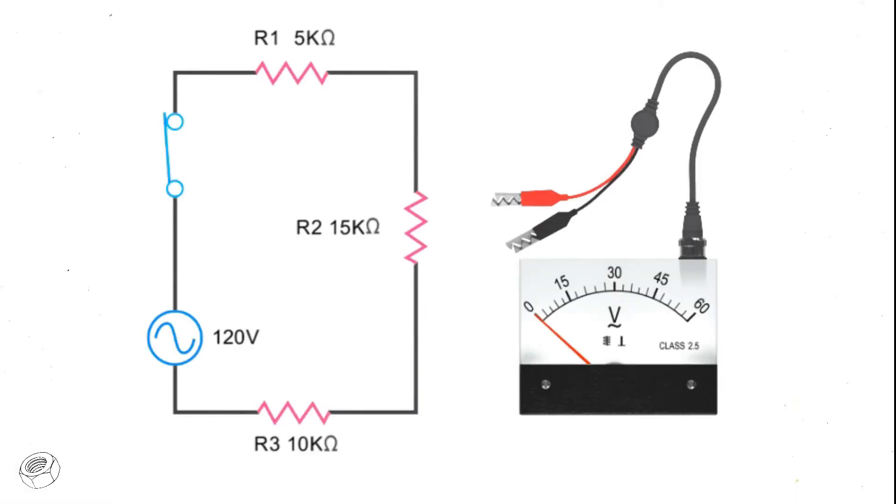A voltmeter is used to measure a potential voltage difference across two points in a circuit. To measure voltage in a circuit, the meter is connected in parallel with the components to be measured.